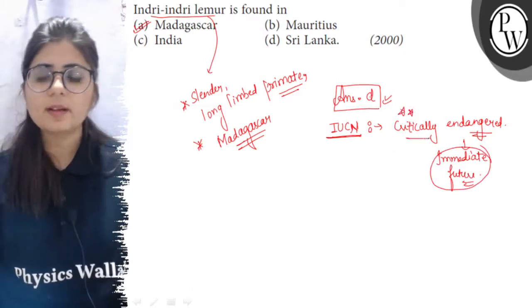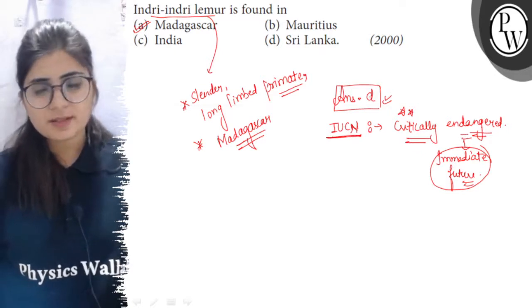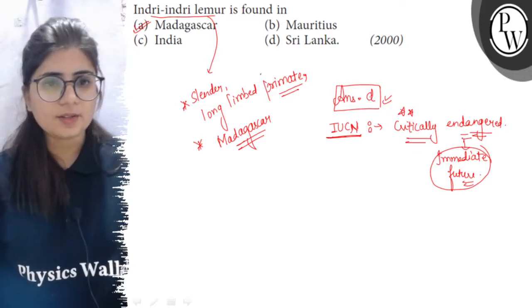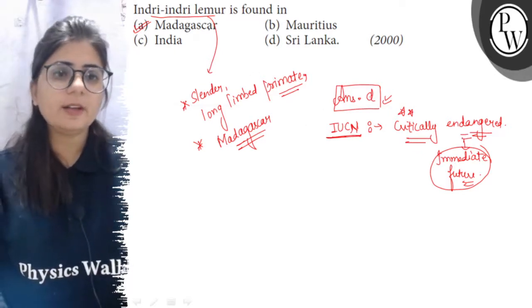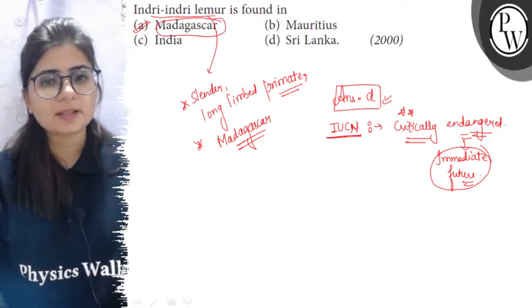This is important to remember that the IUCN conservation status is critically endangered. And this Lemur, Indri Indri Lemur is found in the Madagascar region.